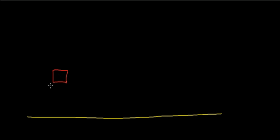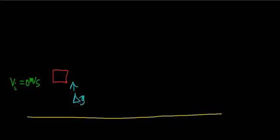Suppose I have some object, and I'm going to drop it from rest, so my initial velocity will be 0 meters per second. As this object falls some distance — let's call this distance delta y of a — it's going to pick up some final velocity, let's call it the final velocity of a.